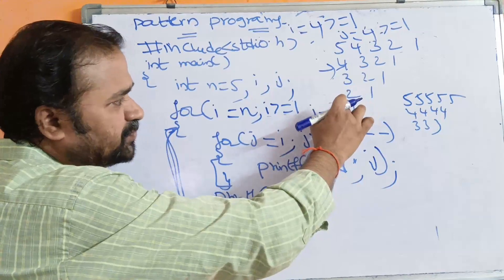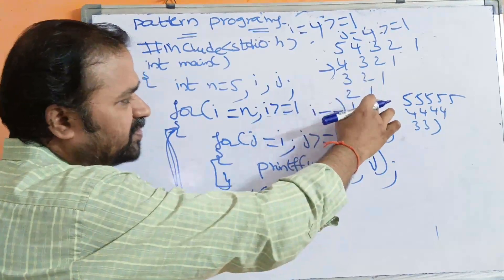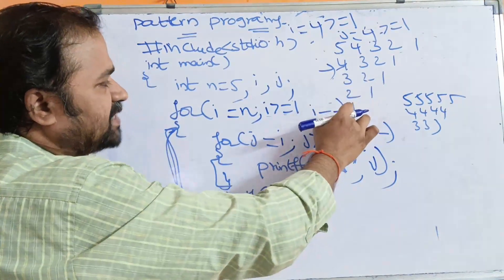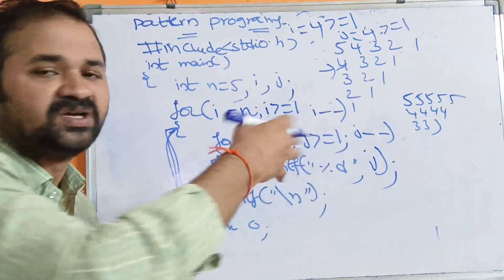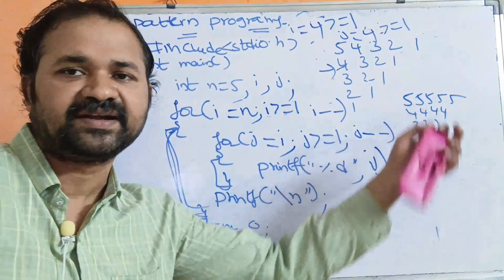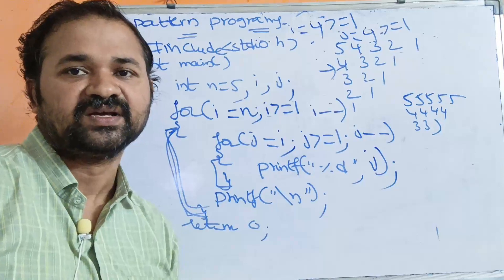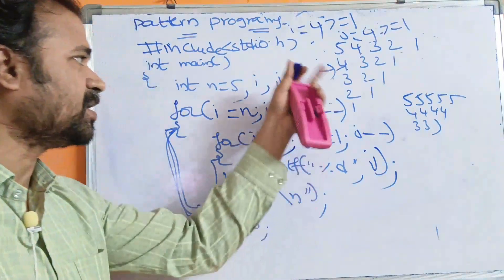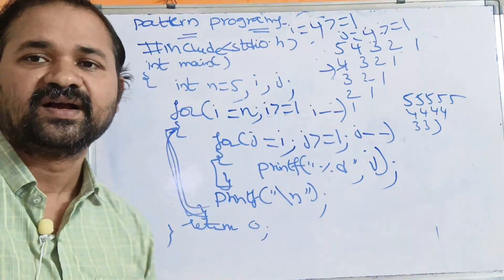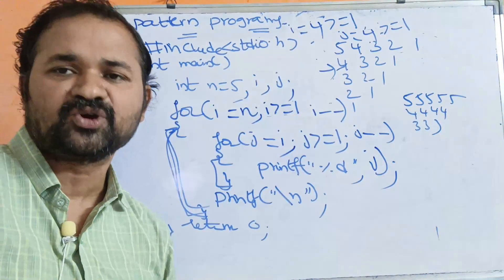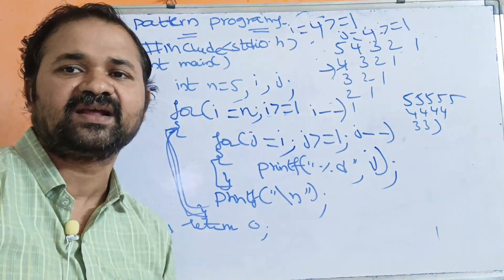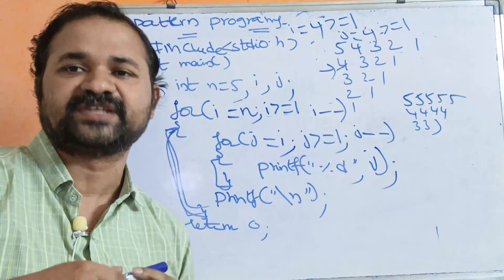Next i value is 2, then 2 minus 1 equals 1, next i value is 1, then 1 minus 1 equals 0. This is the logic of this program. Let's check it in the system.